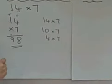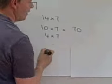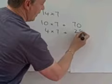So 10 times 7 equals 70. 4 times 7 equals 28.